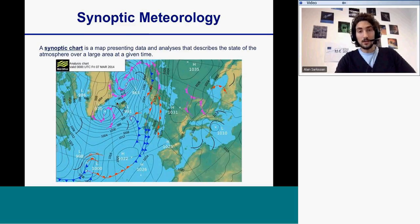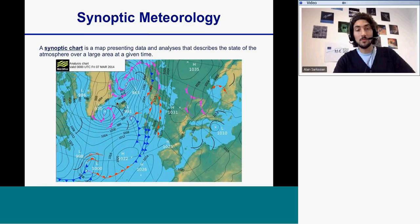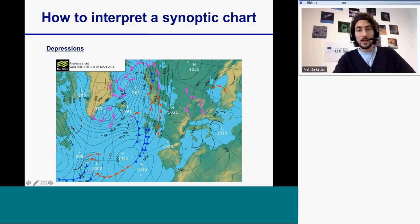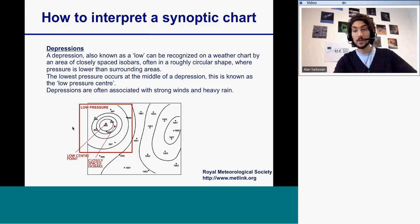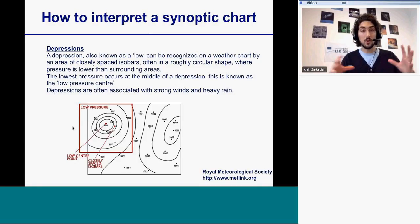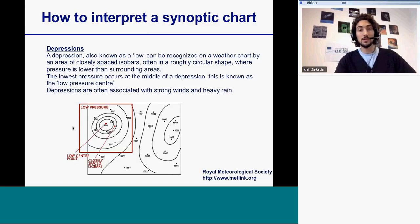I will go into detail about lows — the depression. I will give the definition of what a depression is: it's what we call a low. On the weather chart it is represented by closely spaced isobars, and it's where we find pressure lower than the surrounding areas. The lowest pressure occurs at the middle of the depression.